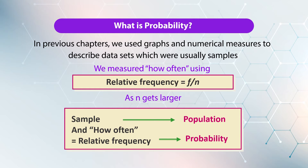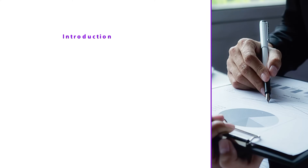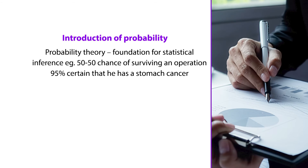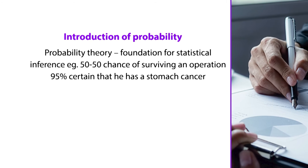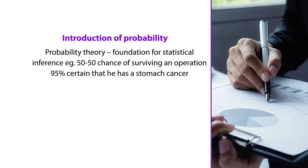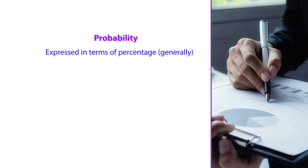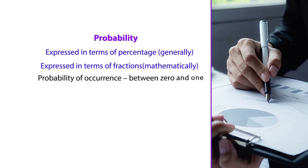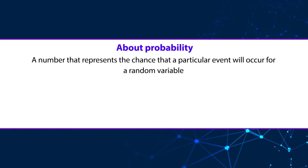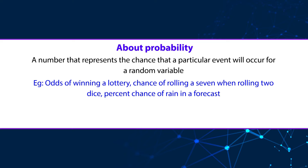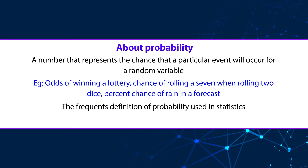Probability helps in getting real results from the sample. Probability theory is the foundation for statistical inference — for example, a 50-50 chance of surviving an operation, 95% certain that a patient has stomach cancer, or 9 out of 10 patients take a drug regularly. Probability is generally expressed in terms of percentage and mathematically expressed as a fraction, with the probability of occurrence between 0 and 1. It is a number representing the chances that a particular event will occur — such as odds for winning a lottery, chance of rolling a 7 with two dice, or percent chance of rain in a forecast.